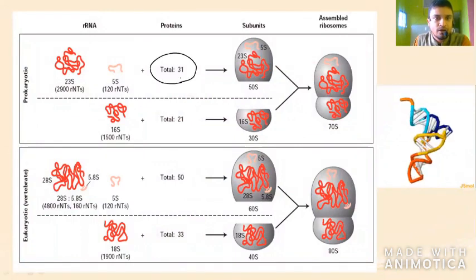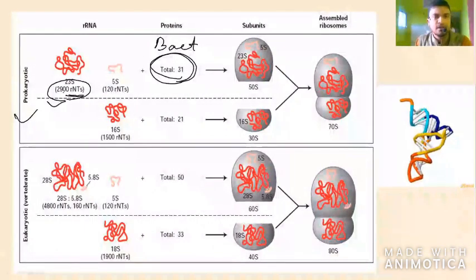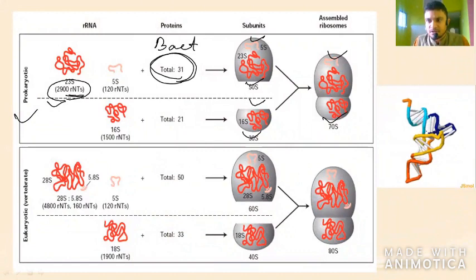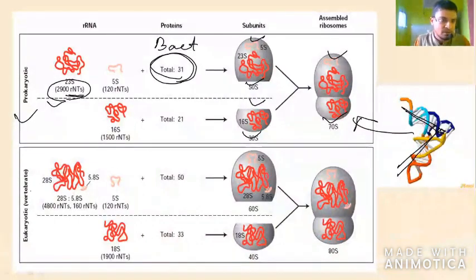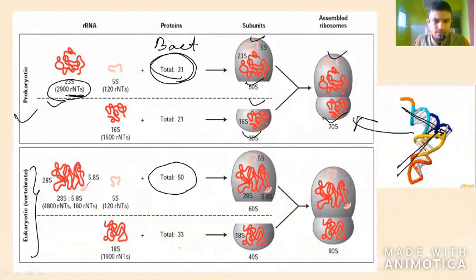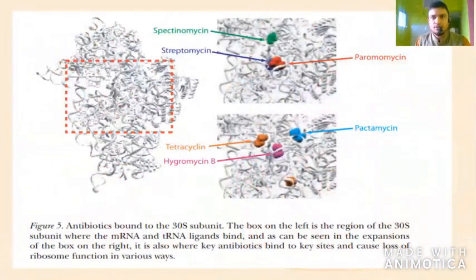There are 31 different proteins in bacterial ribosomal cells, and 2900 ribonucleotides in the 23S rRNA — all of which Venkatraman Ramakrishnan and colleagues studied in detail. You can see in the figure four surfaces exposed versus two surfaces when subunits are combined. The tRNA structure interacts with the ribosome, which we will discuss in a future video. In vertebrates, the number of proteins is slightly more than in the prokaryotic structure: about 50 and 33, totaling around 83.